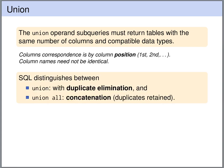SQL offers two different variations of the union. Just UNION, which behaves like set union — it removes duplicates. And UNION ALL, which behaves like list concatenation, preserving the duplicates.